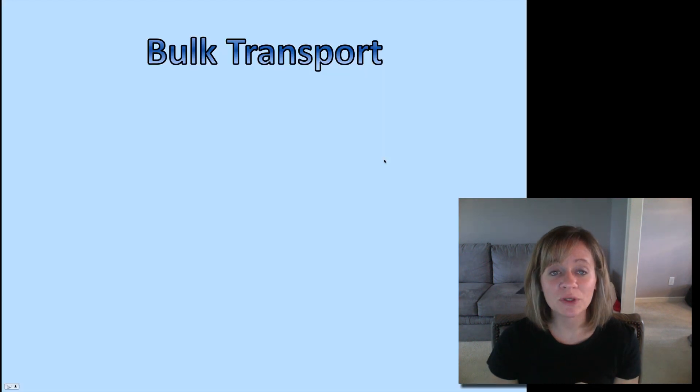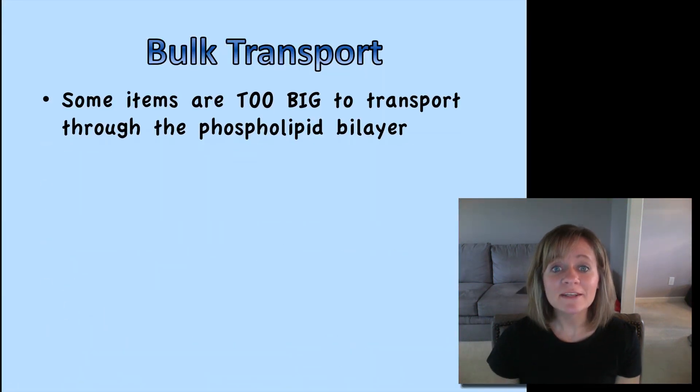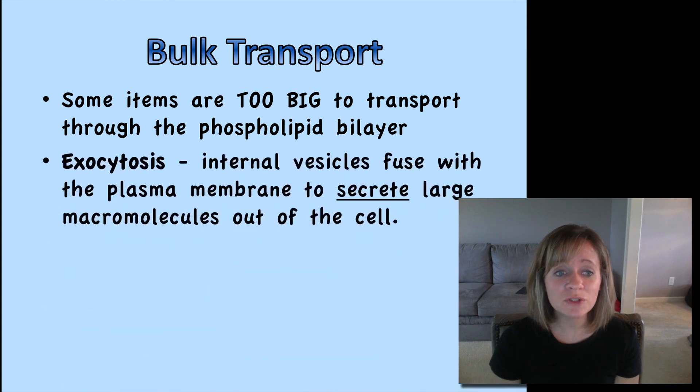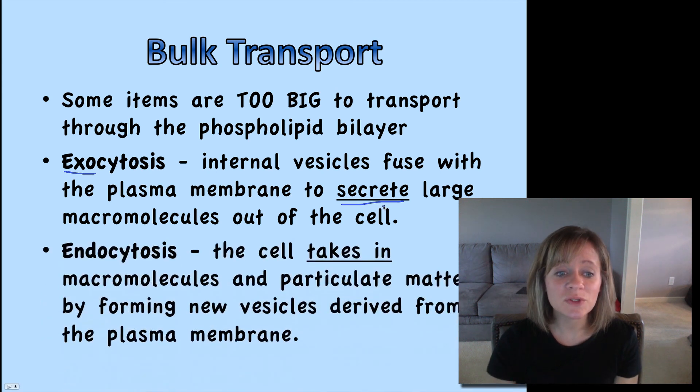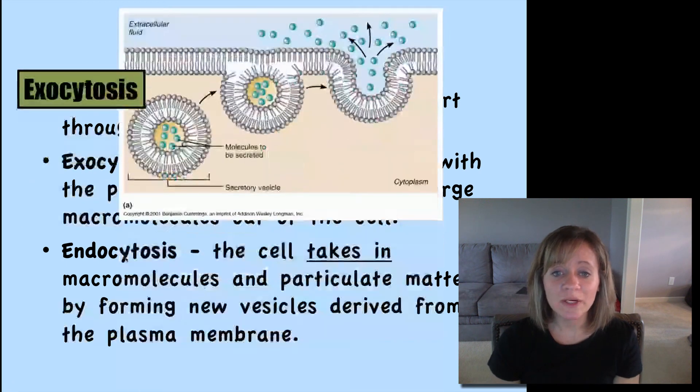One last type of transport is called bulk transport. This is when some items are just really way too big to either go through the lipid bilayer on their own or even through protein. So we have two types. Exocytosis. Exo simply means without. So this is when the cell needs to secrete large macromolecules out of the cell. So they have internal vesicles that fuse with the plasma membrane to secrete those large particles. Endocytosis, this means within. So the cell is eating, the cell is taking in macromolecules through these vesicles. Let's look at a picture of this.